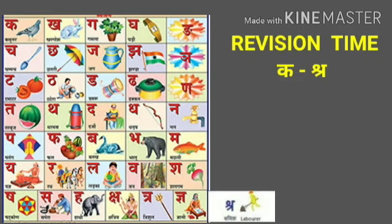Dha se dhakkan, na khali. Ta se tarbuz, ta se tharmas, ta se darzi, ta se dhanush, na se nal, pa se patang, fa se phal, ba se batak, ba se bhalu, ma se machli. Ya se yagya, ra se rat, la se ladka, va se van, sha se shalgam, sha se shatkoon, sha se sapera, ha se hati, sha se shatriya, tra se trishul, gya se gyani, shra se shramik.